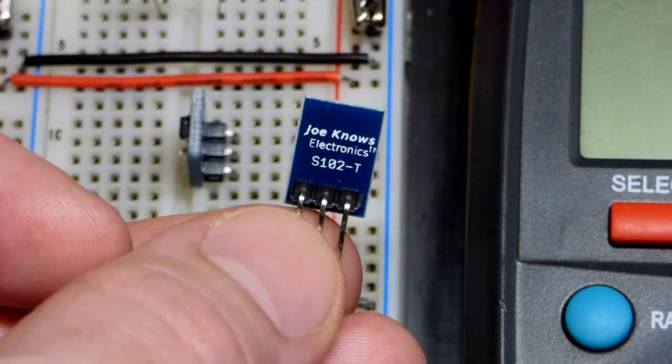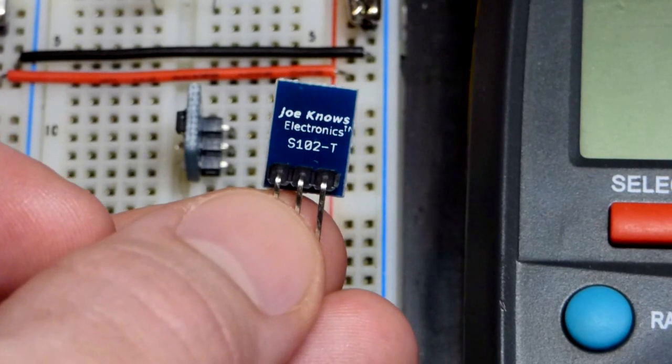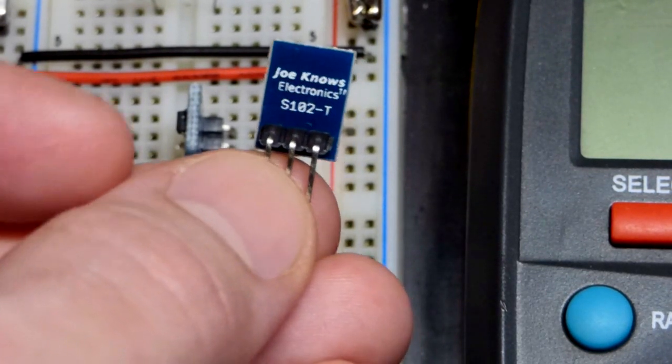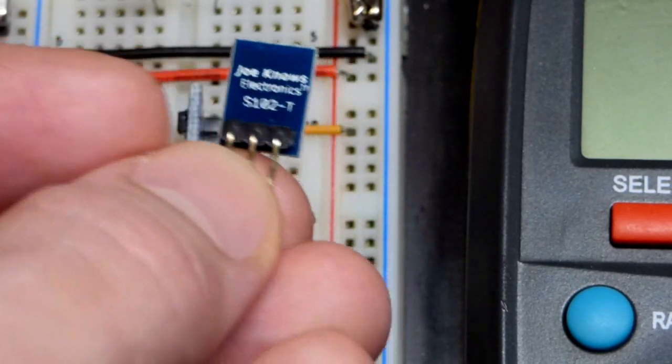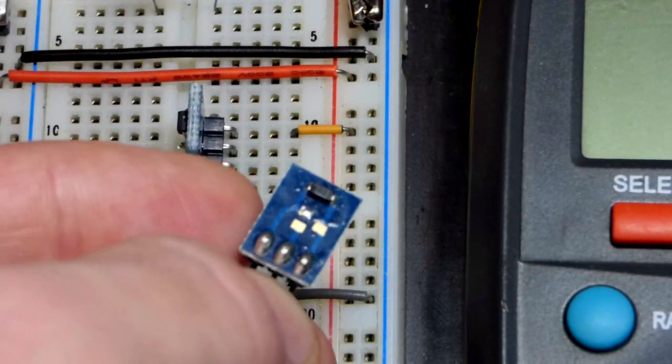In this video, we're going to look at an interesting component from the Joe Knows Electronics Kit. It says S102S for the surface mount component. You can see it's a little surface mount component.